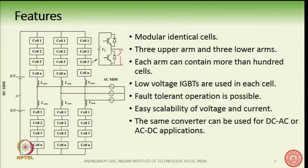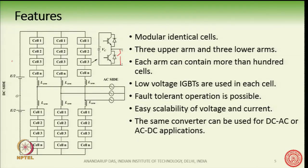Each cell has its own capacitor, two switches, and a bypass feature. An attractive feature of MMC is that low-voltage transistors or IGBTs — for example, 3.3 kV or 2.5 kV IGBTs — can be used in each cell. Since many cells are connected in series, we can reach very high voltages, such as ±400 kV on the DC side.